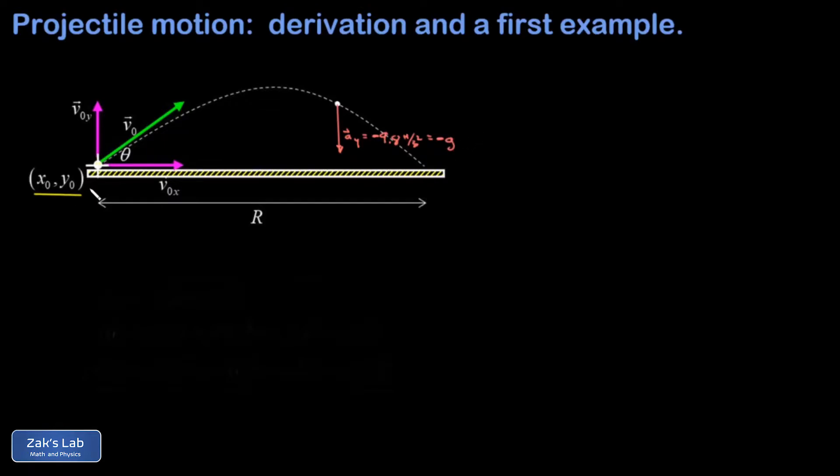Also, notice in the graph, we've labeled the initial position. So I have an ordered pair of x naught, y naught. And we have the initial velocity vector v naught, and it's already been split into components. And I have an initial x velocity of v naught x, and an initial y velocity of v naught y.